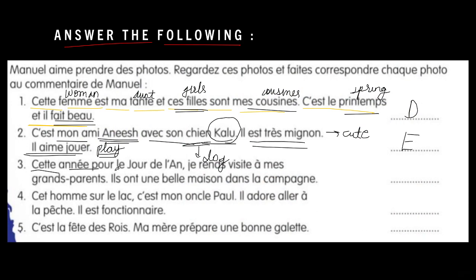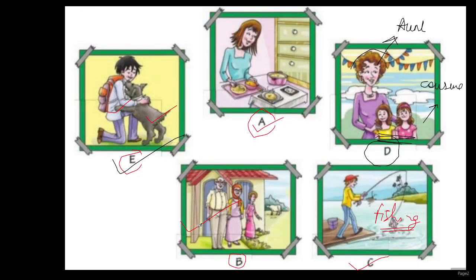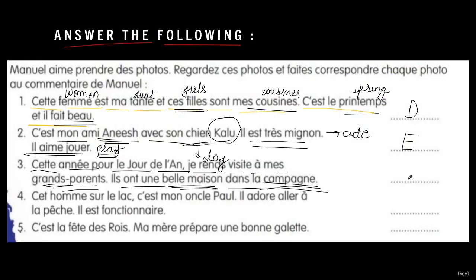The next sentence says — on the new year's day, we went to visit our grandparents. There is a beautiful house in the mountains. So here if you see, grandparents can be seen and there is a beautiful house — this may be a mountain. So yes, B suits this and we'll write B here.